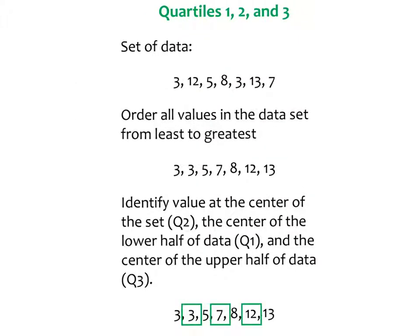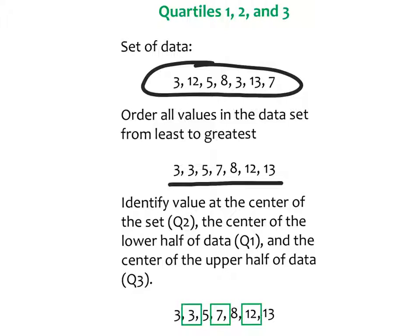Here's an example. I have a set of data: 3, 12, 5, 8, 3, 13, and 7. The first thing you need to do is order the values from least to greatest, so we've done that in step 1. All of the values are in order from the lowest to the highest. Now let's find the center of the set. Quartile 2 is at the number 7, because that gives me three numbers on the left side and three numbers on the right side. 7 is Q2.